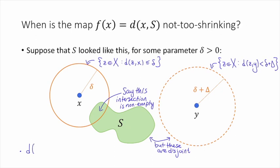So if this is the case, then the distance between y and S minus the distance between x and S is going to be at least little delta plus big delta because S does not intersect this ball. So that's at least little delta plus big delta minus... the distance between little x and S, that's going to be at most delta because there is some point in S that lives in the ball of radius delta around x. So minus delta, so this is just equal to big delta. So that means that if it just so happens that S looks like this with respect to these balls around x and y, then we get this not-too-shrinking property that we were after.